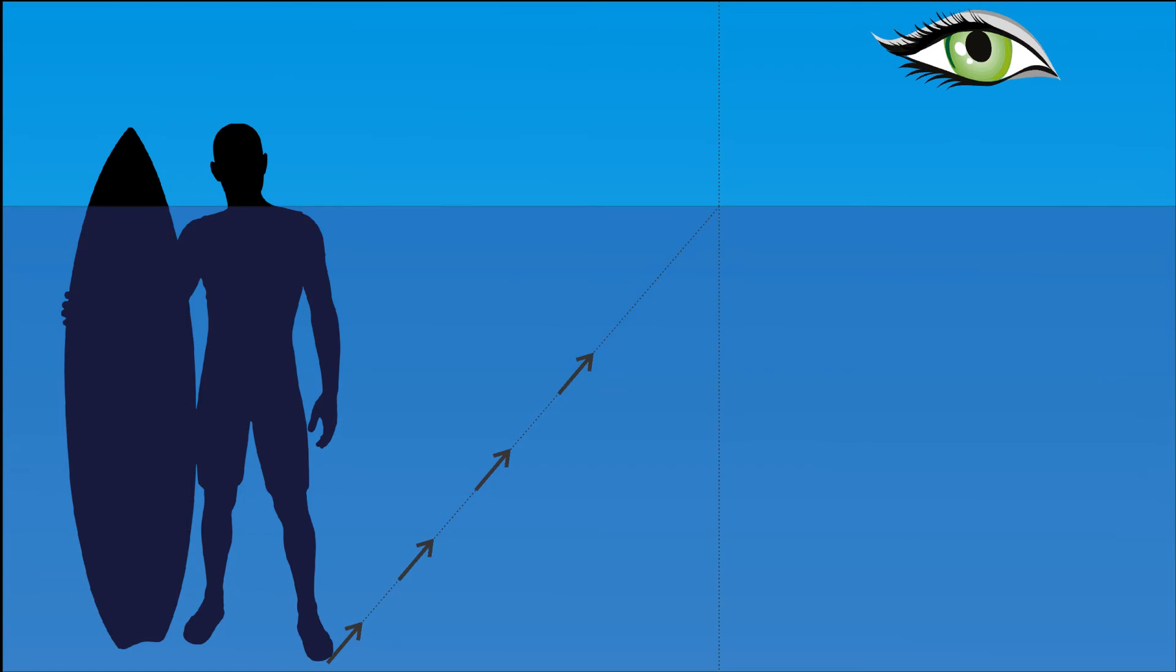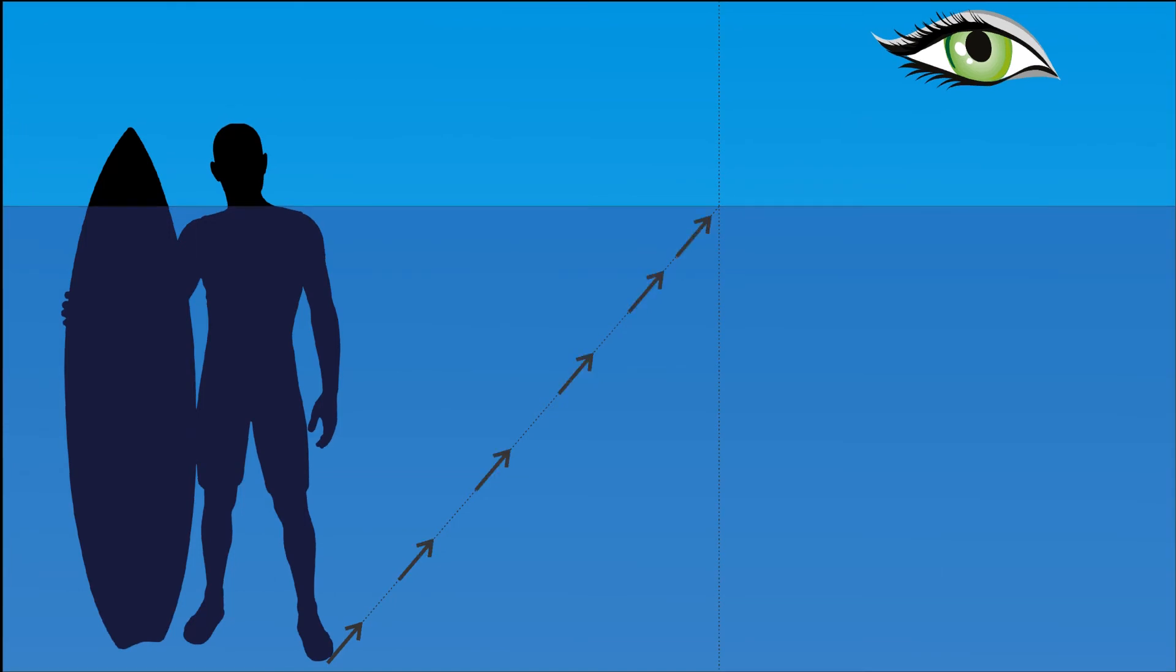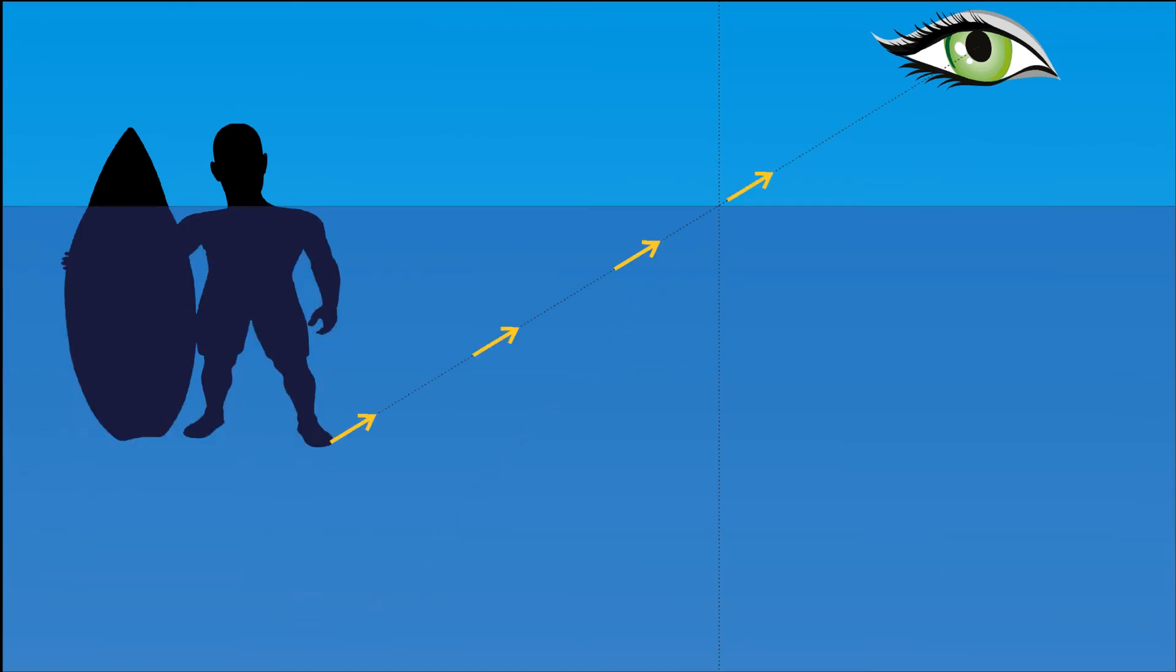Because of all this when we see a body inside of water we see it under a bigger angle than we would see it outside of water. This is the reason why we make a wrong estimation and why things look smaller to us than they really are.